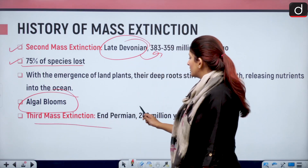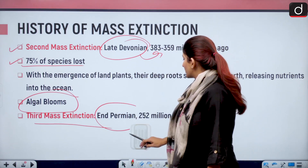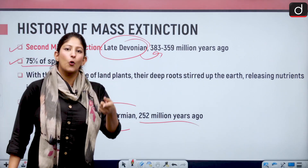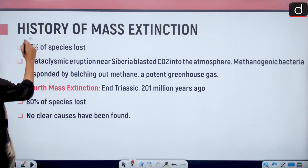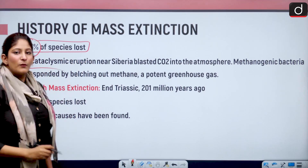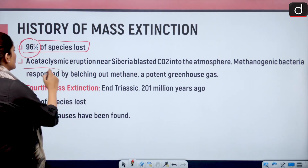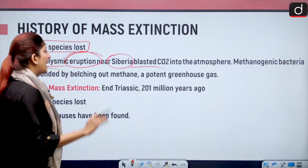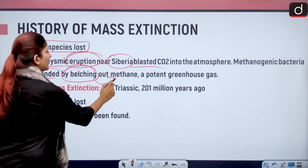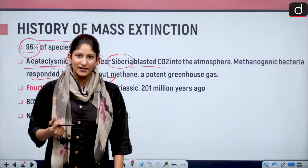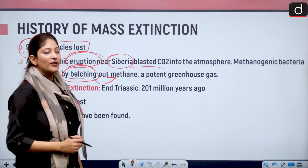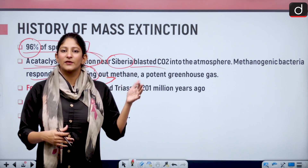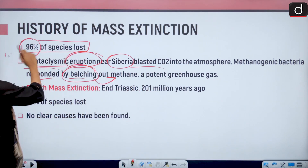The third mass extinction happened in the end Permian age, approximately 252 million years ago. Here, 96 percent of the species were lost. Because of a cataclysmic eruption near Siberia, it blasted CO2 into the atmosphere, causing methanogenic bacteria to respond by releasing methane — a potent greenhouse gas — and also hydrogen sulfide into the atmosphere. Everything causing greenhouse gas emission also caused global warming, which is why 96 percent of the species were lost.